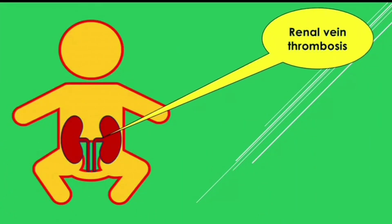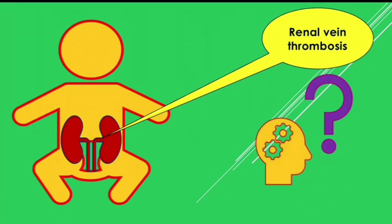The next manifestation is renal vein thrombosis, which can occur due to polycythemia. The baby presents with hematuria, flank mass, and hypertension. This should be managed conservatively.